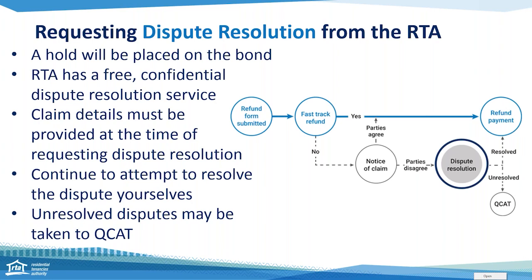For tenants going through the dispute process, they would see the claims made on the bond but are not asked for claims like a managing party. Tenants have an opportunity to dispute the claims through the dispute resolution process. Responding to the notice of claim and disagreeing initiates the RTA's free and confidential dispute resolution service. Parties should still continue to discuss the bond refund and resolve disputes themselves prior to RTA involvement. The RTA encourages parties to share information such as invoices, photos and rent ledgers to resolve disagreements. The RTA does not require these to be uploaded through web services.